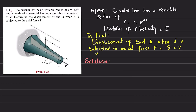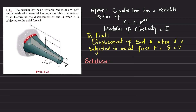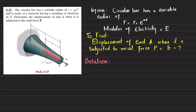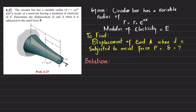Welcome back. Problem 4-27: a circular bar has a variable radius given by r = r₀·e^(ax) and is made of material with modulus of elasticity E. We need to determine the displacement at end A when it is subjected to axial force P. The radius varies along the length L as a function of x, so at any position x the radius is r = r₀·e^(ax), where r₀ is a constant.